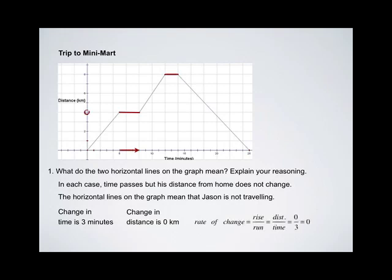So, his rate of change here, or rise over run, is given by the change in distance over the change in time, 0 over 3. So his rate of change is 0. That's equivalent to his speed.